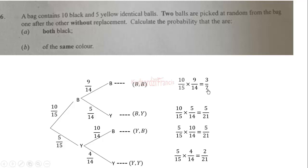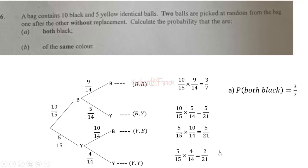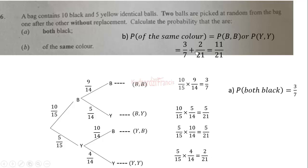Both being black gives 3 over 7, which is what the first part of the question asks. For the same color — both black or both yellow — we add the two probabilities: 3 over 7 plus 2 over 21, which equals 11 over 21. Both methods give us the same result.